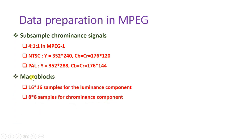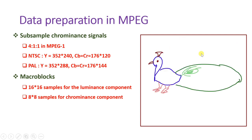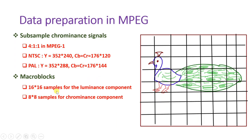One frame is subdivided into macroblocks. 16×16 samples are used for the luminance component and 8×8 samples for the chrominance component. A combination of these blocks makes up the image. The image is bisected into blocks — size of each block is 16×16 for luminance and 8×8 for chrominance. That is how we prepare data for MPEG.